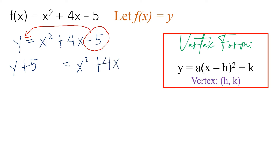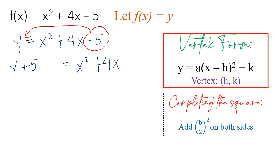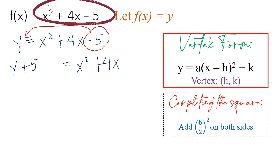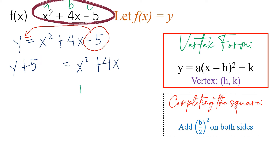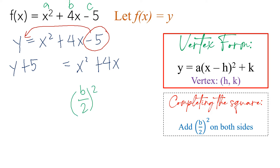After you transpose the constant, this x squared plus 4x on the right side — we have to make it a perfect square trinomial by applying completing the square. We need to add (b over 2) squared on both sides. In our equation, a is 1, b is 4, and c is negative 5. So b over 2 squared becomes 4 over 2 squared, which equals 2 squared, which is 4.